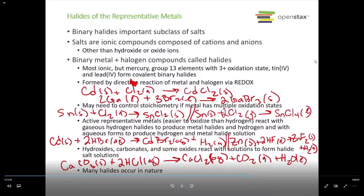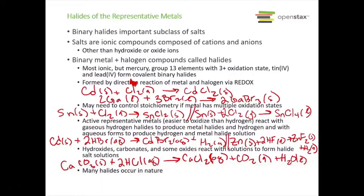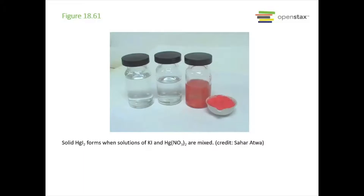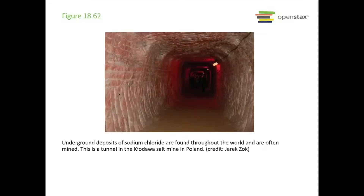Many of our halides occur in nature. Sodium chloride is a big one, as is magnesium chloride — you can find them in the ocean or in salt mines and salt deposits. Here's a picture of mercury iodide that forms when we mix potassium iodide and mercury nitrate, as well as a tunnel from a sodium chloride mine — the Kłodawa salt mine in Poland.